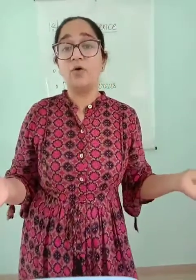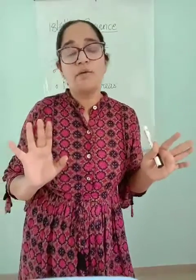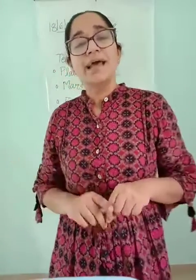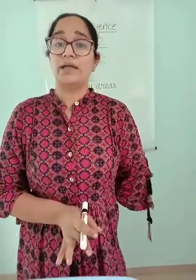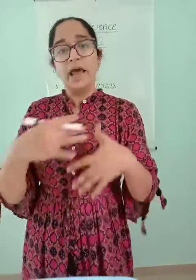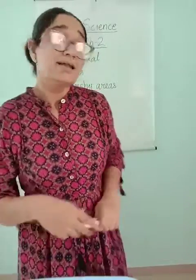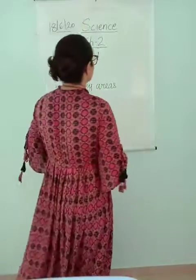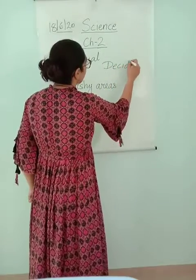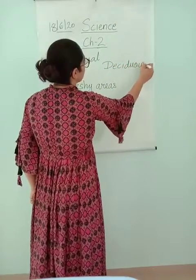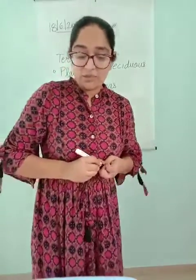So if you observe around you, there must be some tree. If you observe that there is some tree which is shedding its leaves altogether in the autumn season and growing them back again in the spring season, these plants or these trees are called deciduous trees. These are called deciduous trees.